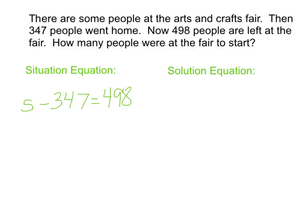Now when I look at it, I think that would be kind of hard to guess and check to figure out what s is equal to. So I need a solution equation. And this is the kind of problem where we work backwards. If we want to know who was there at the start, we're going to take who we had at the end, and we're going to add whoever left.